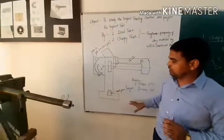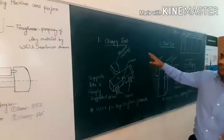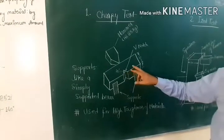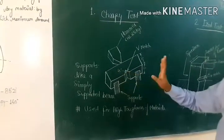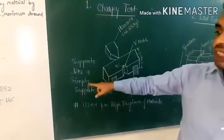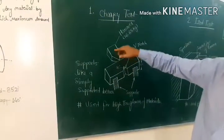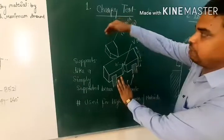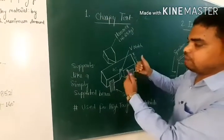Here you can see the diagram of this machine on which we can perform the Izod test and the Charpy test. In the Charpy test, we use the specimen just like a simply supported beam. We use the striker on the opposite side of the V-notch. When we load the hammer, it strikes from the opposite side and our workpiece will break.